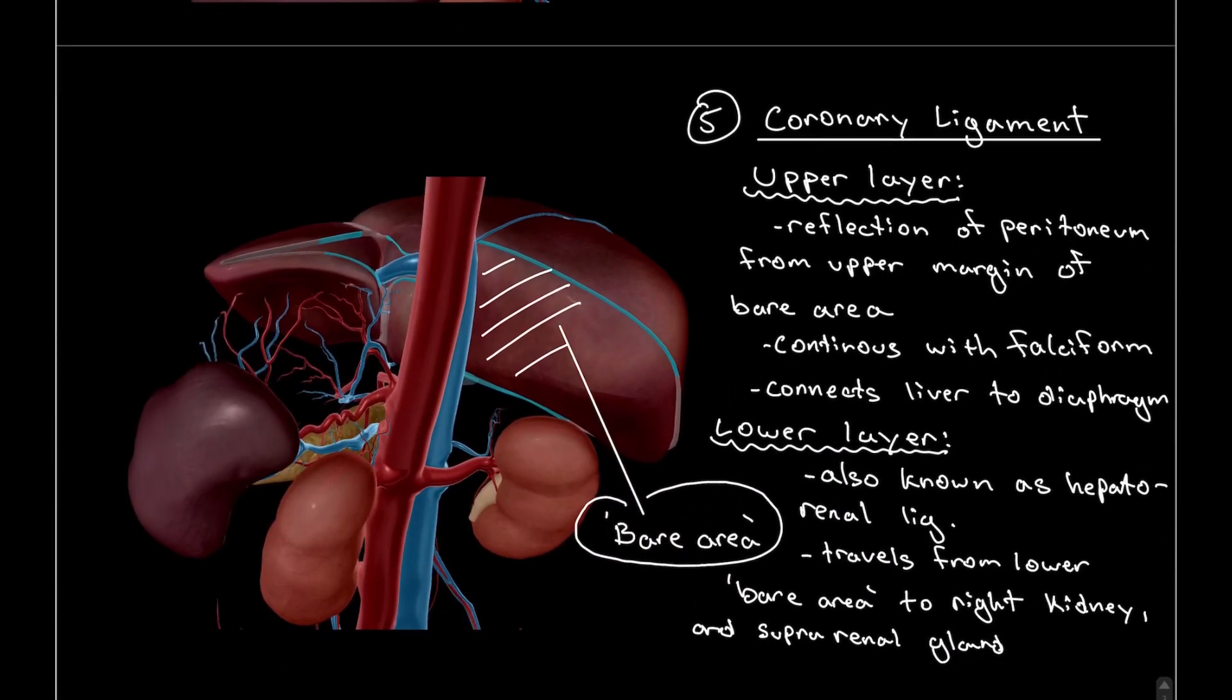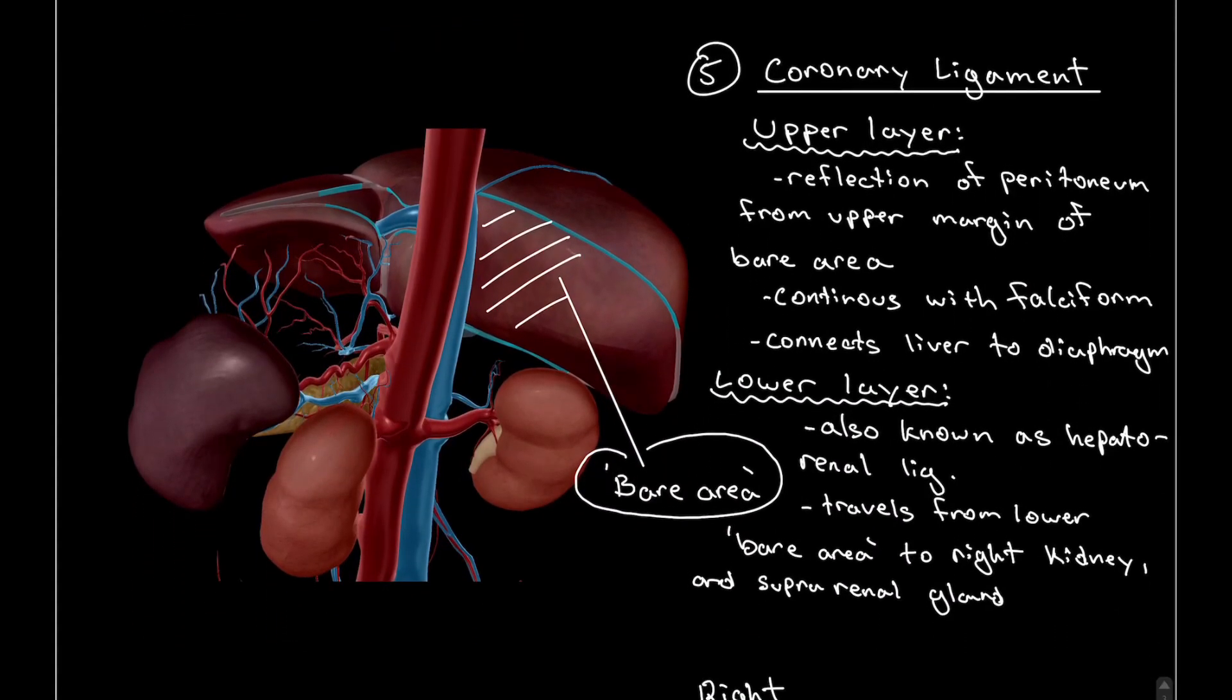And moving on, number five, the coronary ligament. This is the largest ligament that covers the majority of the liver. It is divided into two layers: the upper layer and the lower layer. The upper layer reflects the peritoneum from the upper margin of the bare area, so we can see that bare area in between the upper and lower layers of the coronary ligament.